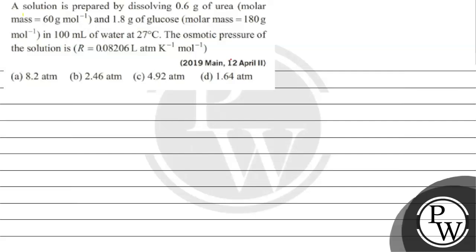Let's read this question. A solution is prepared by dissolving 0.6 gram of urea (molar mass 60 gram per mole) and 1.8 gram of glucose (molar mass 180 gram per mole) in 100 milliliters of water at 27 degree Celsius. The osmotic pressure of the solution is — R equals 0.08206 liter atm per Kelvin per mole. Option A: 8.2, Option B: 2.46, Option C: 4.92 atm, Option D: 1.64 atm.